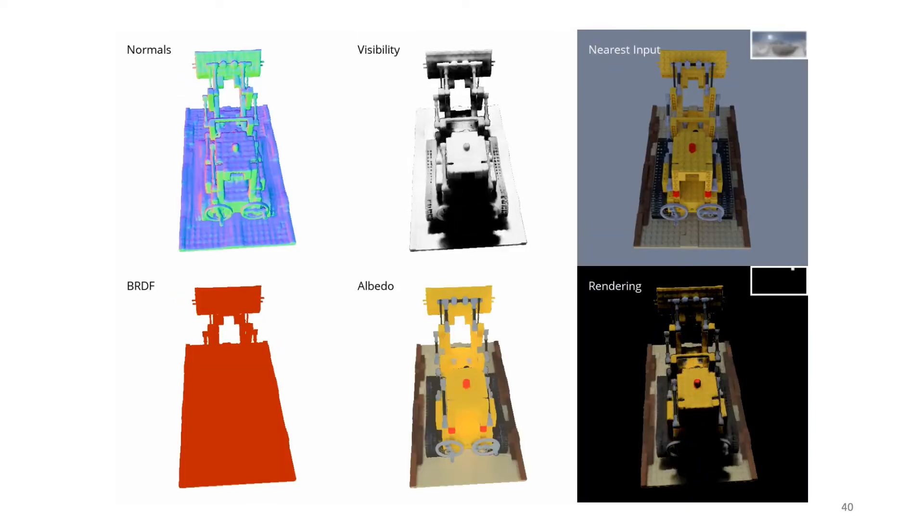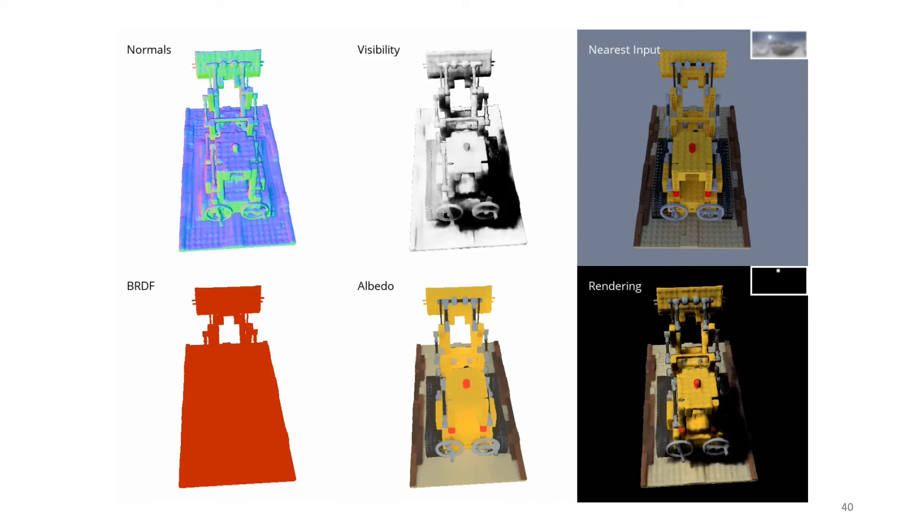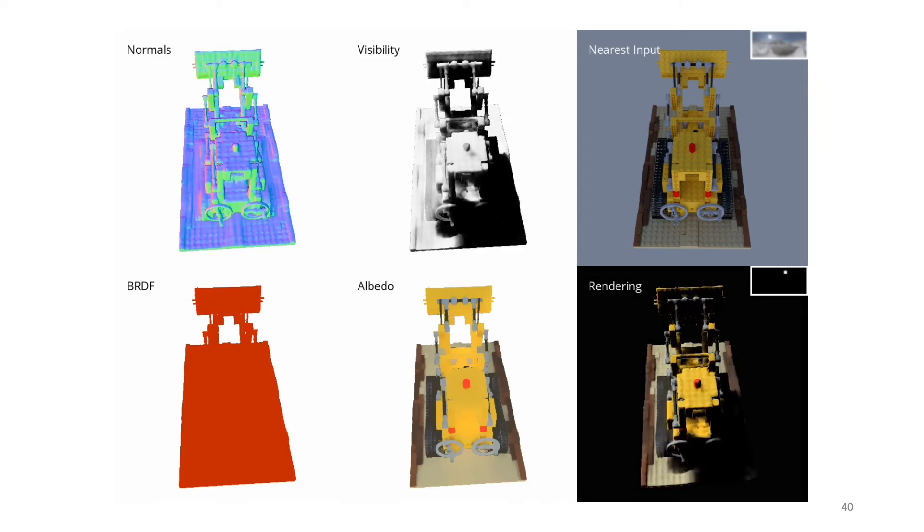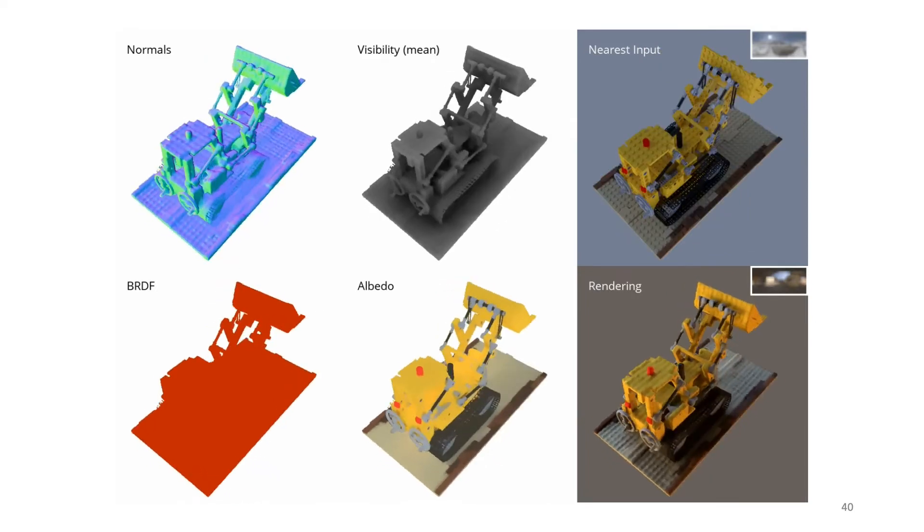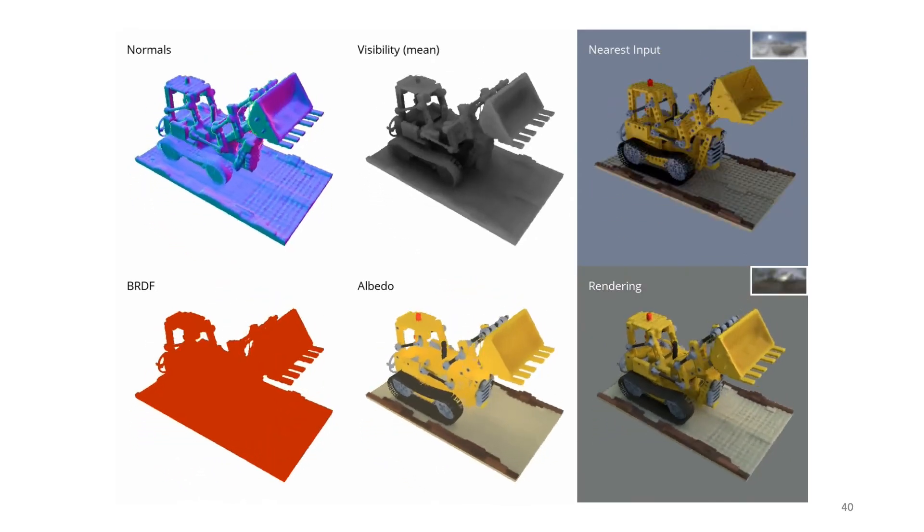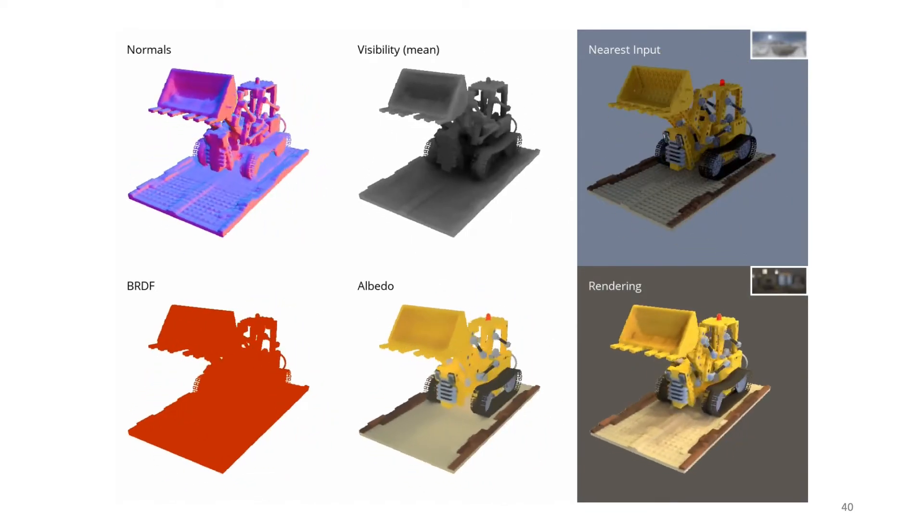Another example, where we show the synthesized harsh shadows. Note how the normals are smooth and yet detailed, and how the albedo is shadow and shading-free.